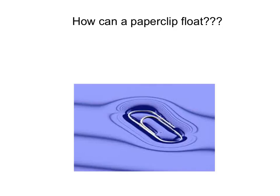The paper clip sits on top of the water because of surface tension. If you tried to balance it on its tip, the pressure would break the surface tension and the clip would sink. Like other parts of the lab, adding a detergent, soap, or any non-polar substance to the water changes those cohesive properties and decreases the surface tension.